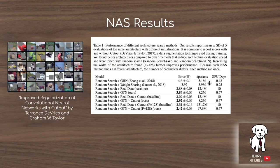It's interesting to note the GPU-day speedup compared to training on real data. Training on the 50,000-image CIFAR-10 training set takes much more time when looping through it to search for different neural architectures, compared to training on the much smaller dataset generated from the generative teaching network.